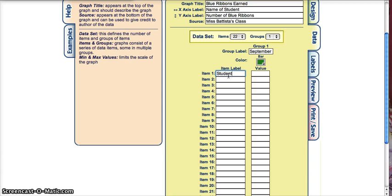Student number 1 has 10 ribbons. Student 2 has 5 ribbons. Student 3 hasn't quite gotten on there yet — 0. Student 4 has 22 ribbons.